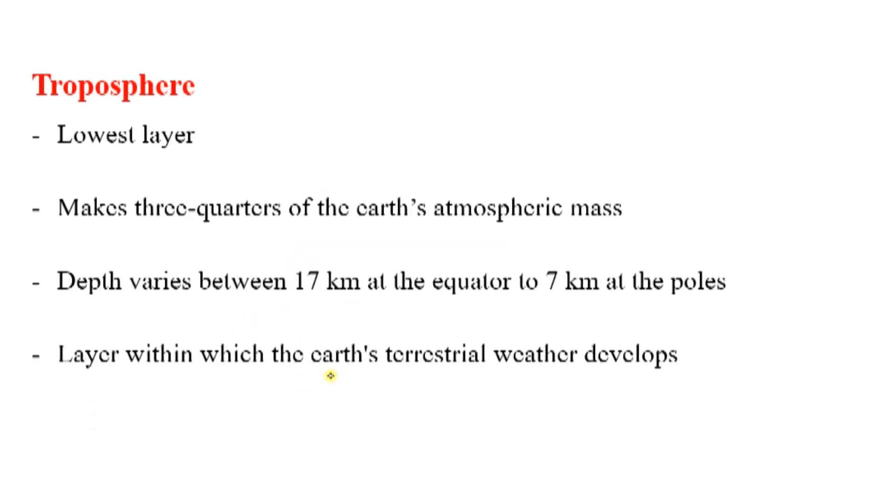We begin by looking at the first layer and its characteristics. The first layer, the troposphere, is the lowest layer and it makes three quarters of the Earth's atmospheric mass.